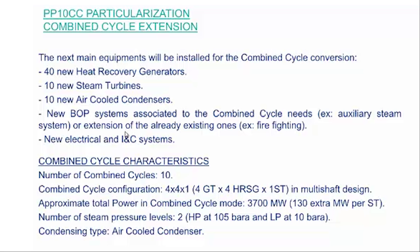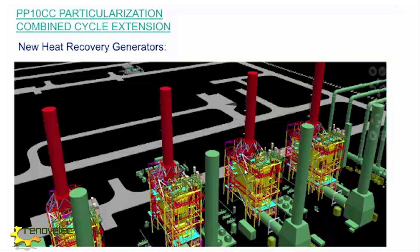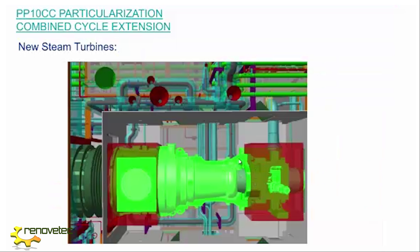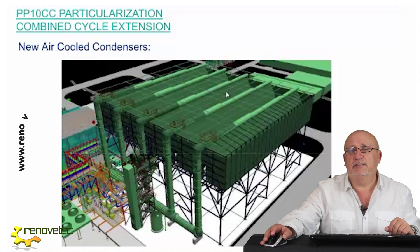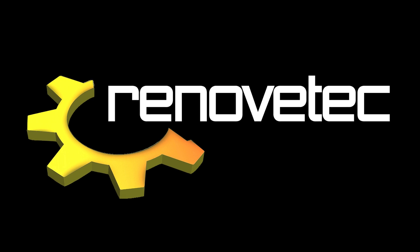The balance of plant systems — for example the water treatment plant — and other elements are all part of this project. The total installed power of PP10 is 3,700 megawatts, making it one of the biggest combined cycle plants in the world. The new HRSGs are supplied by NEM. The steam turbine is the SC4 model — a very reliable steam turbine. The air-cooled condenser is the new EACC. In this video, we have seen the main elements of a combined cycle and the particularization of the PP10 project.